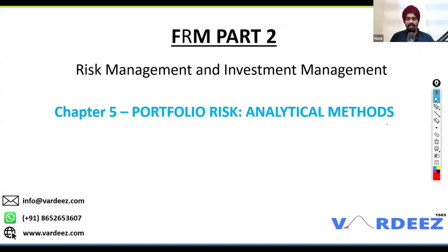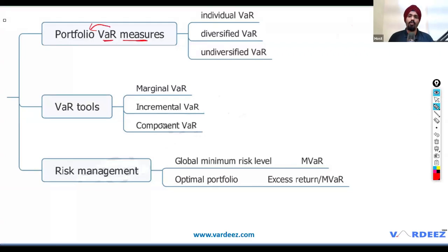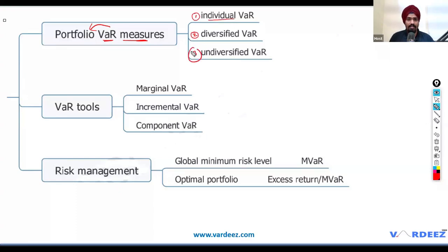Let's try to understand this — it is very interesting. This is how the chapter is actually structured. First, we'll talk about VAR measures that work on a portfolio level: individual VAR, diversified VAR, and undiversified VAR. These three things relate to VAR on a portfolio level.